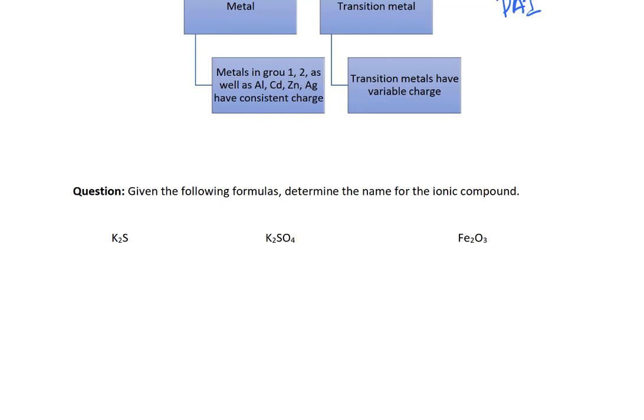So everything in group one is always a one plus. Everything in group two is always a two plus. That one plus looks ugly. Let's fix that. Aluminum is always a three plus, cadmium is always a two plus, zinc is always a two plus, and silver is always a one plus. Now that might seem like a lot of really annoying stuff to memorize, but it's actually a little bit more simple than it looks. Because on the periodic table, there's aluminum, zinc, and silver are all in a line like this. So if you can remember three plus, then you just count down to get to two plus and one plus.